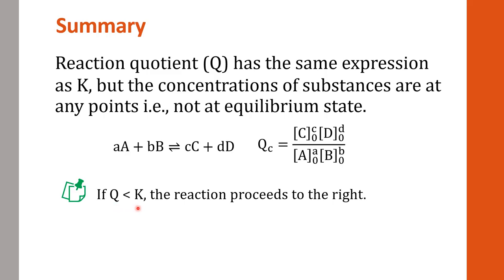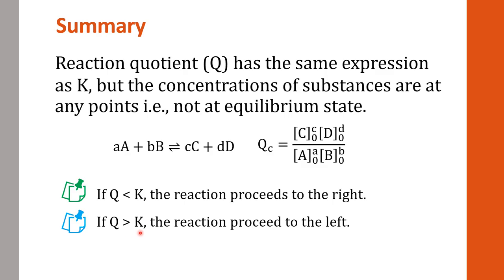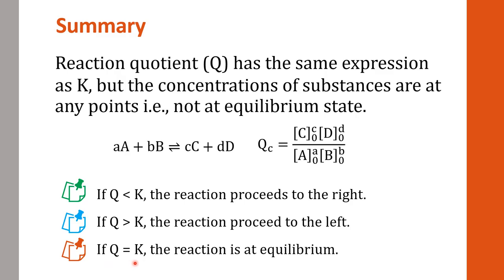In summary: if Q is less than K, the reaction proceeds to the right and product is increased. If Q is greater than K, the reaction already has excess product and will proceed to the left, increasing the reactant. If Q equals K, the reaction is at equilibrium. Take some time to review this concept, and hopefully you will understand it. See you next time.